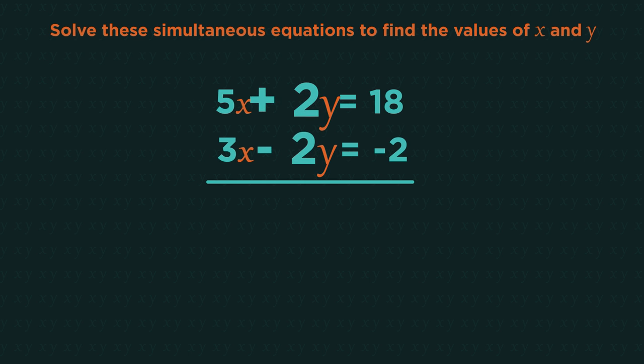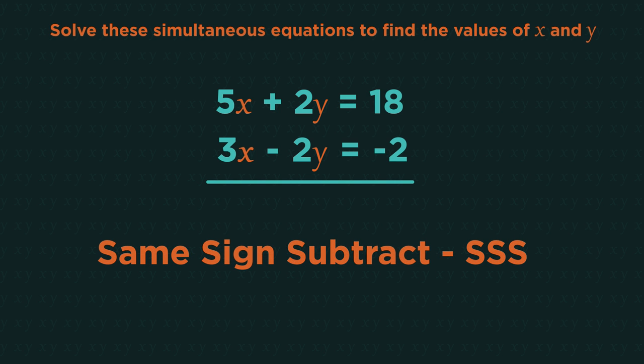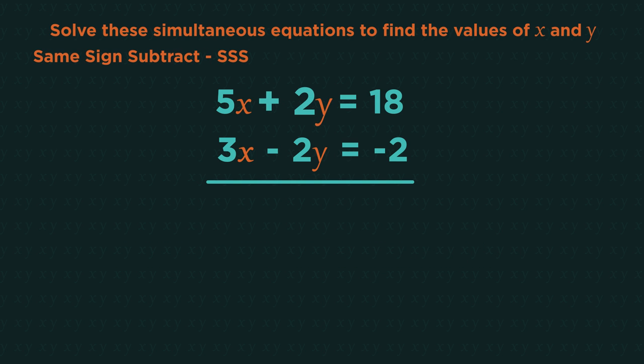Looking back at our matching two y's, if the signs are the same, we subtract. Just remember, same sign subtract, S-S-S. Here the signs are different. This one is plus 2y and the other is minus 2y, so we add the two equations.